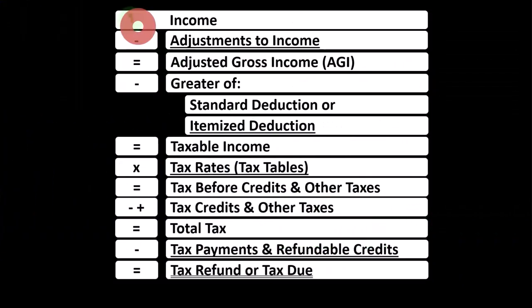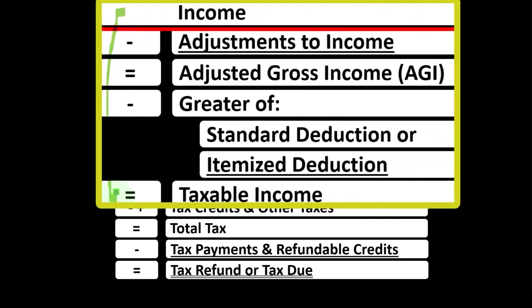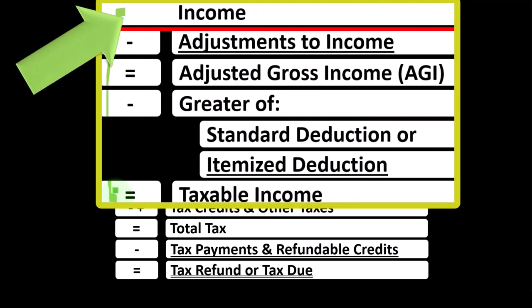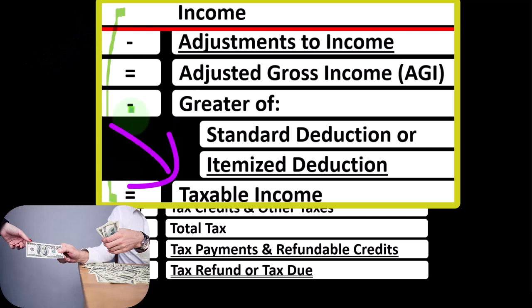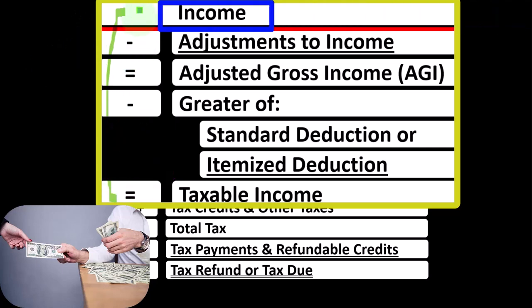Looking at the income tax formula, we're focused on line one: income. The first half of the income tax formula is basically a funny income statement — normally you have income minus expenses resulting in net income. Here we have income minus various deductions resulting in taxable income. With the income line, we want it as low as possible for taxes, so we're looking for things we can exclude from income.